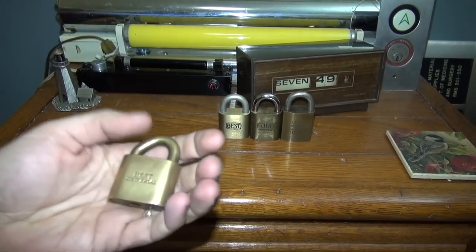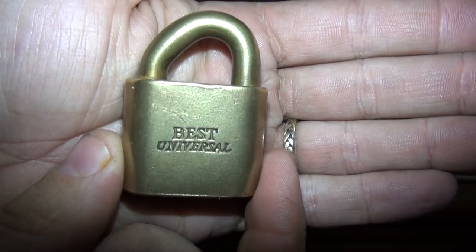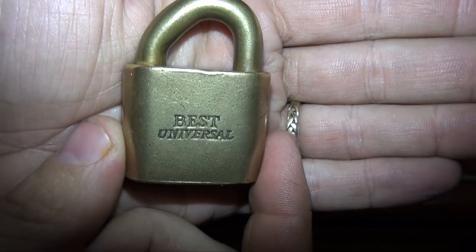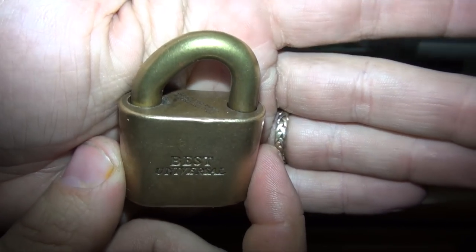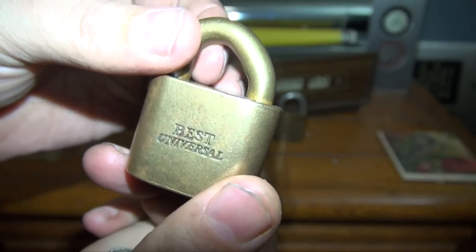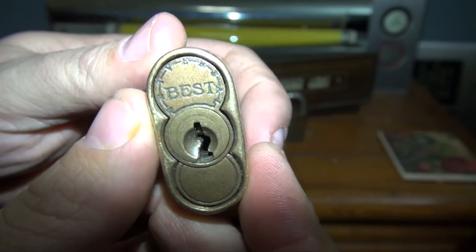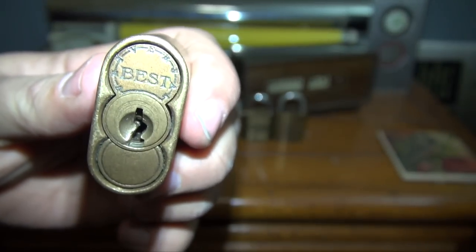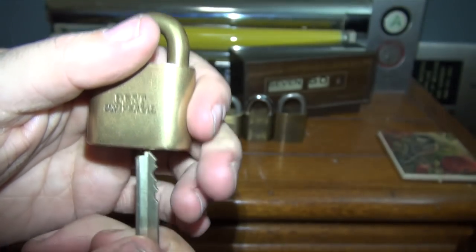Now this lock is from the 1920s. Let me get the camera to focus on my hand. It has the old Best Universal logo on it, and on the core it is stamped Best Universal as well. And wait until we see when I pull the core out. We're going to go ahead and open up the lock here, and I'm going to show you the top of the lock.